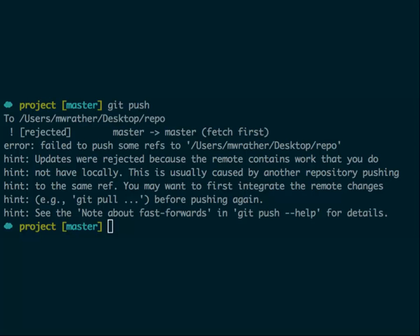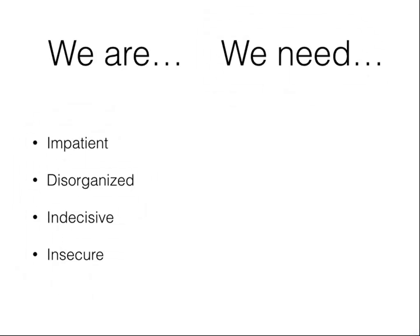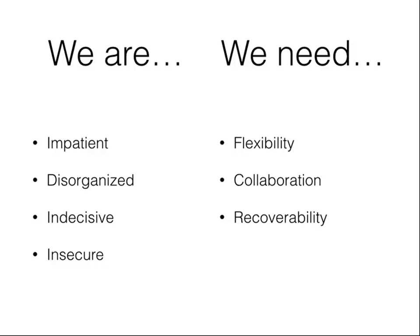I was so afraid of this the first time I saw it. Now I love it because it means I get to yell at somebody on IRC. So, as developers, we are impatient, disorganized, indecisive, and insecure. These are not Larry Wall's virtues of the programmer — impatience, laziness, and hubris — this is just a state of the union. Because we are impatient, we need flexibility; because we are disorganized, we need collaboration; because we are indecisive, we need recoverability; and because we are insecure, we need awesome sauce.